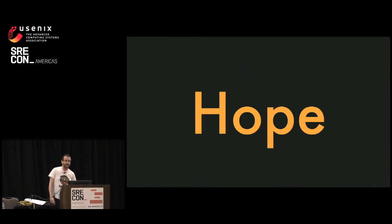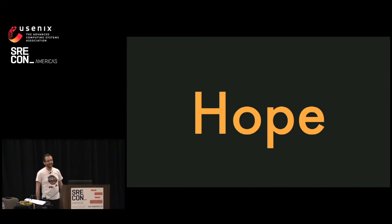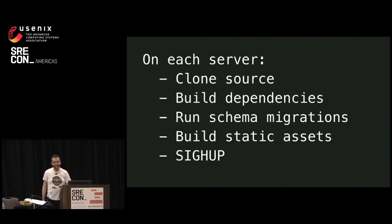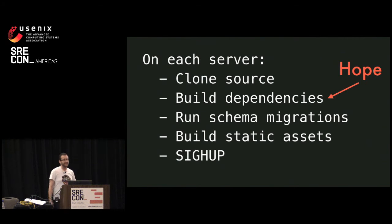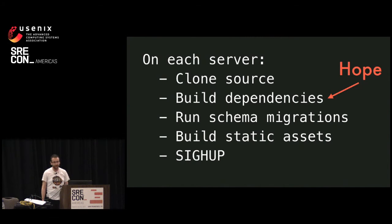So what's wrong with that? There's a ton of hope involved — the entire process relies on hope. And hope is a great thing to have in life, but it's not a desirable property of a software system. Looking at that flow again: assuming we don't mess around with Git history, cloning is probably going to work, so I'll give it a free pass. Building dependencies definitely relies on hope. Some of the errors you get while doing this are literally notorious if you're a Ruby developer.